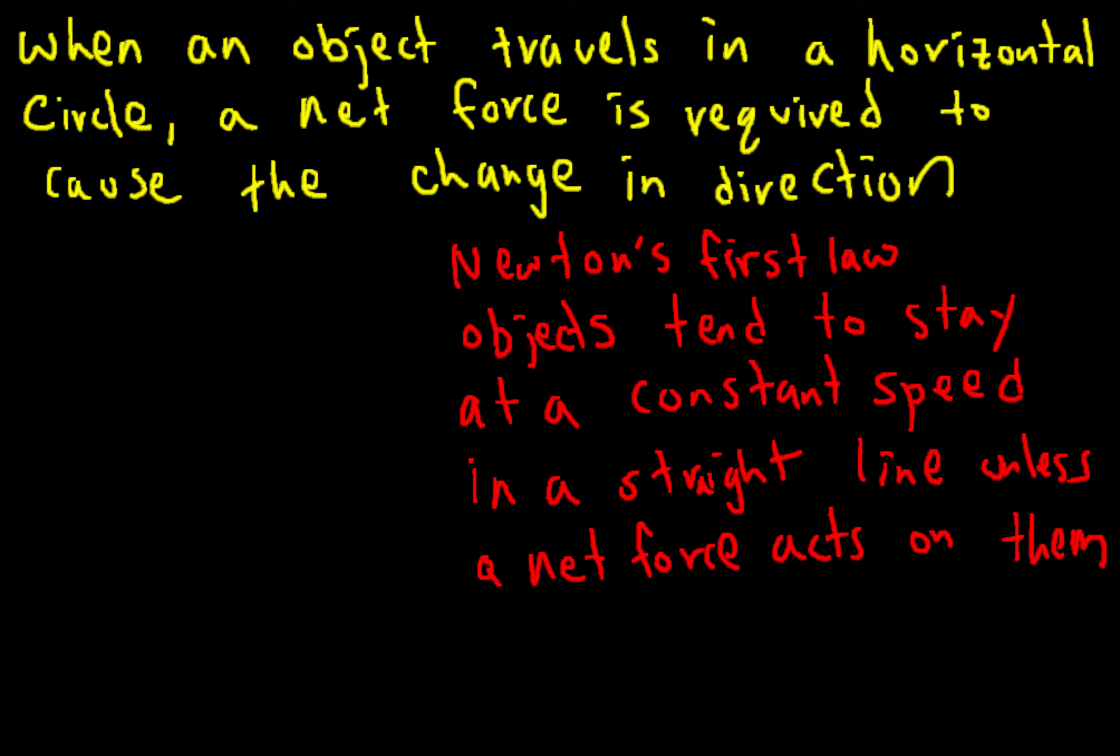For circular motion, the object travels in a circle because its velocity experiences a perpendicular force continuously changing its direction.